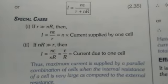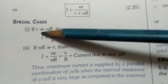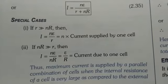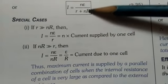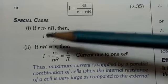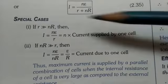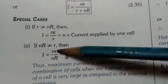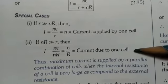Then special cases. Now if in this formula we put R is greater than NR, that means NR can be neglected. So by neglecting this term, we get NE upon R, that is N into current supplied by one cell. And if NR is greater than R, then we get this one, and then cancel E upon R, that is current due to one cell.